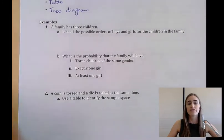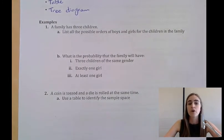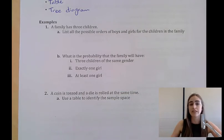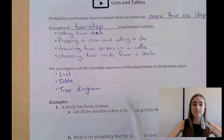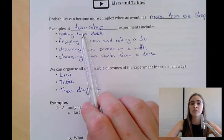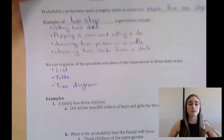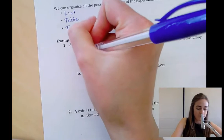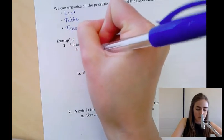Our first example says a family has three children. We're asked to list all the possible orders of boys and girls. This is a three-step experiment. We could have boy, boy, boy - all three coming out to be boys.